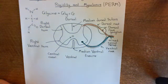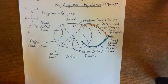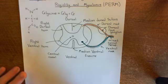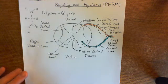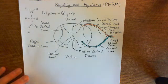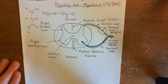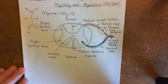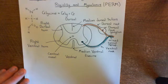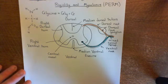Welcome back to this next video in which we are discussing the progressive encephalomyelitis with rigidity and myoclonus, PERM, and the involvement of the glycine receptors in progressive encephalomyelitis with rigidity and myoclonus.